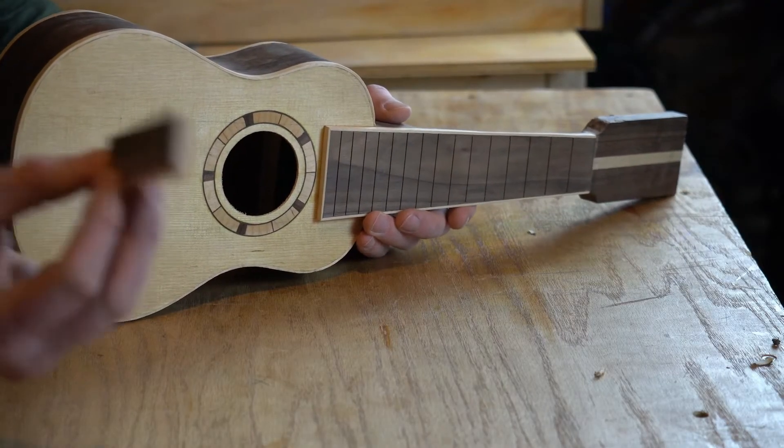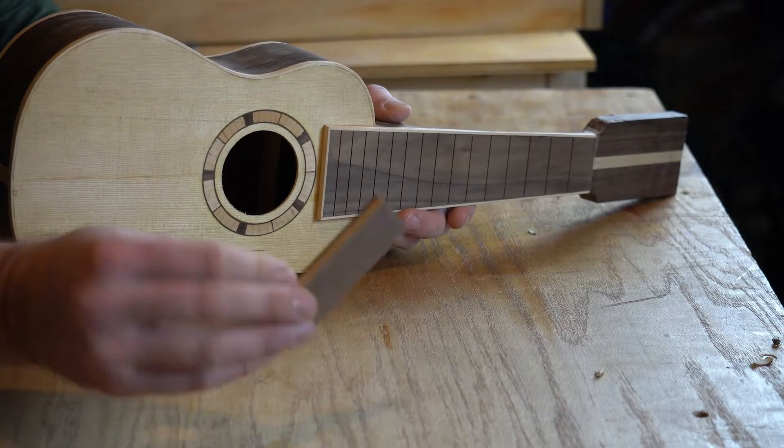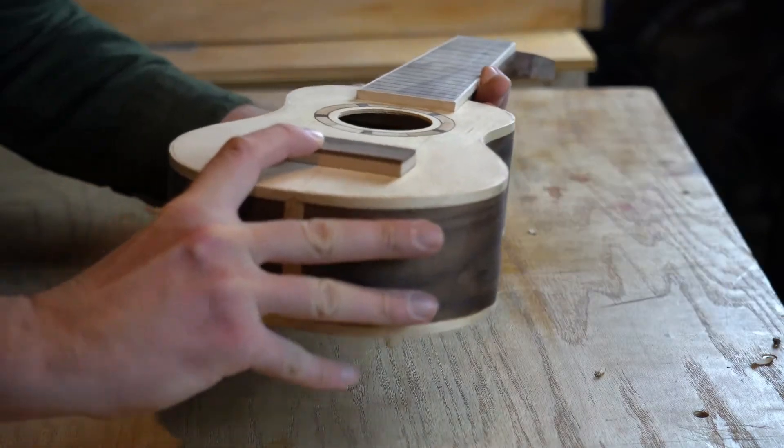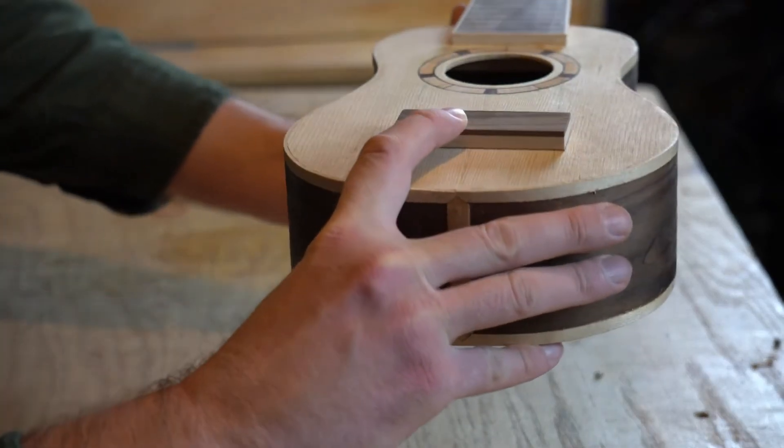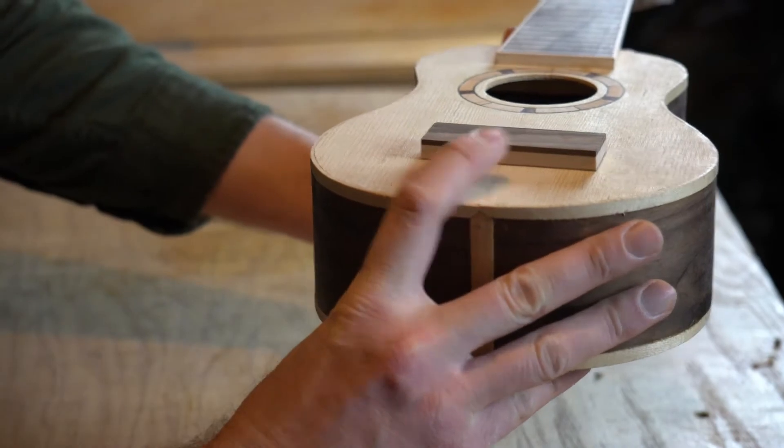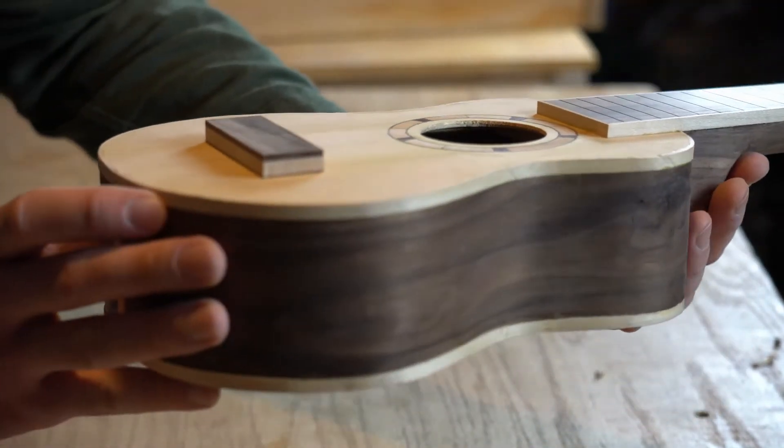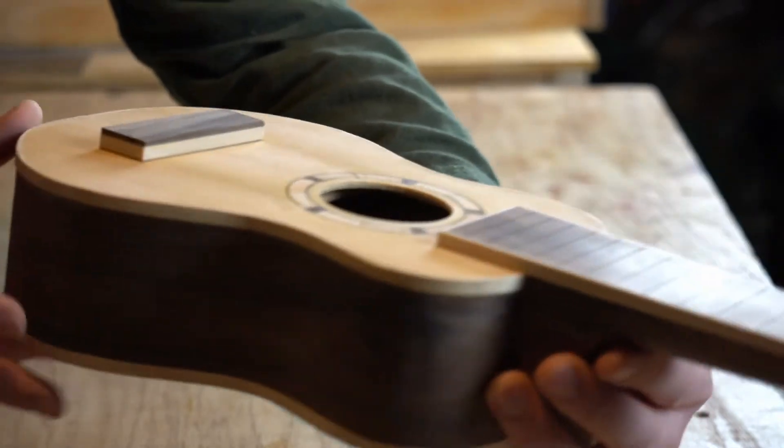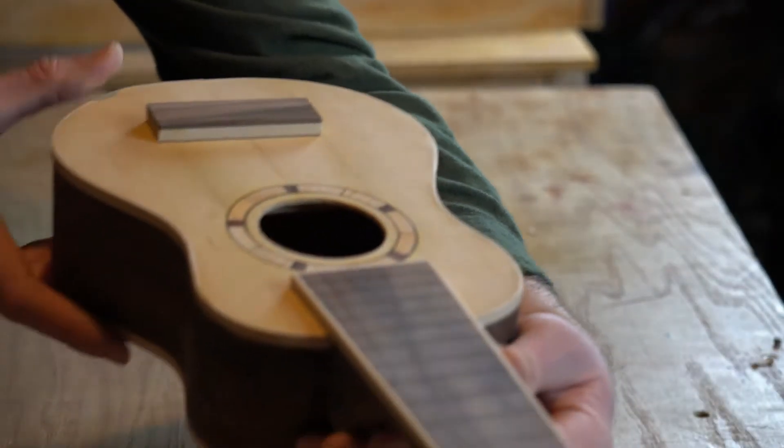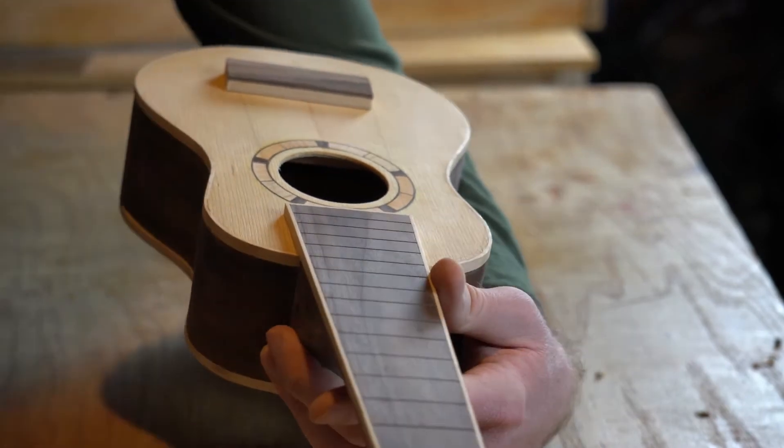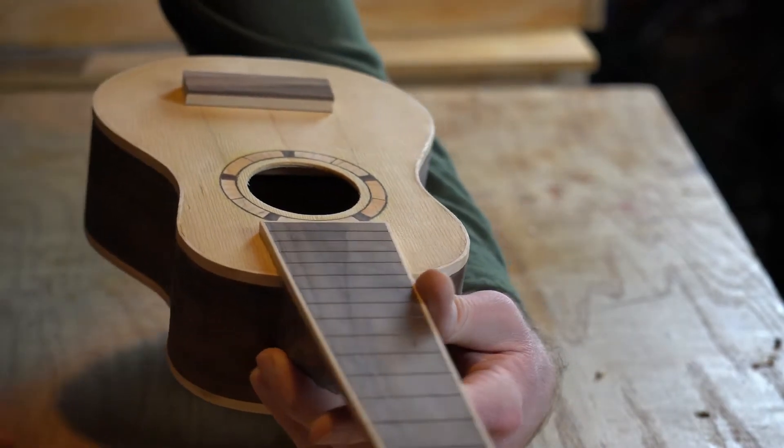So here's the ukulele. Here's my bridge blank, the bridge sandwich. And this is how I'm envisioning it to look. We'll have that walnut up top, the maple, and I'm hoping you can see it's just a little bit of an outline around that maple where it meets the soundboard. That's the veneer. It's just there for a little extra contrast.